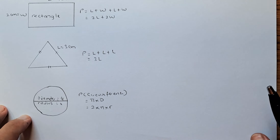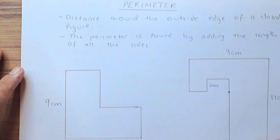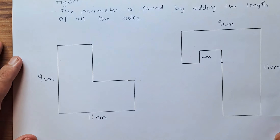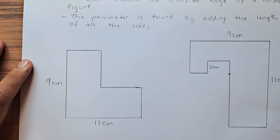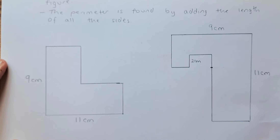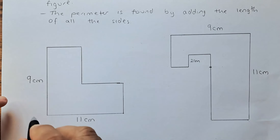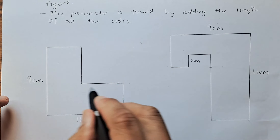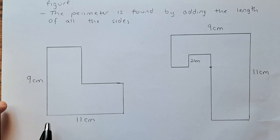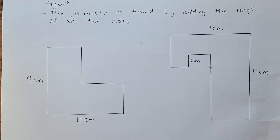Now we go back to the question from before. A common question is to find the perimeter of a composite shape. We have two examples here. Take a moment to think about it — you are supposed to add up the perimeter of this shape, but you are only given some of the sides. So how do you calculate the perimeter?